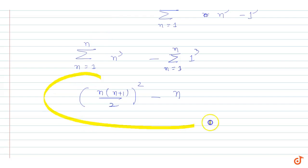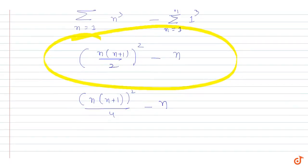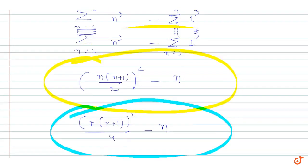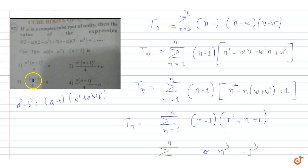So the final answer is n(n+1)²/4 - n, which simplifies to n²(n+1)²/4 - n. Looking at the options carefully, option 1 and option 3 look similar but one has n² and one has n. Our answer matches option 1: n²(n+1)²/4 - n.